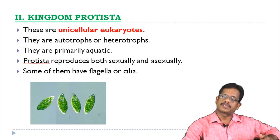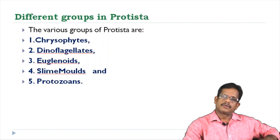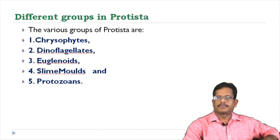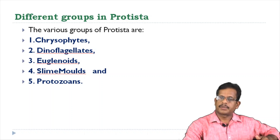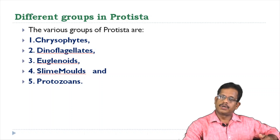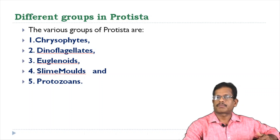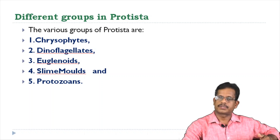What are the different groups in protists? There are 5 different groups of protists. 1. Chrysophytes, 2. Dinoflagellates, 3. Euglenoids, 4. Slime Molds, and 5. Protozoans. These are the different groups.